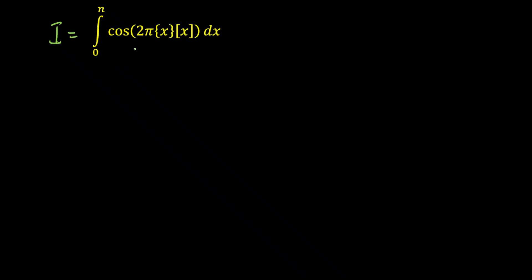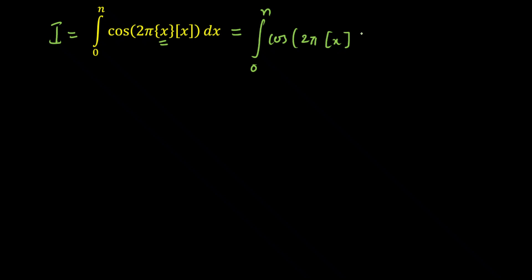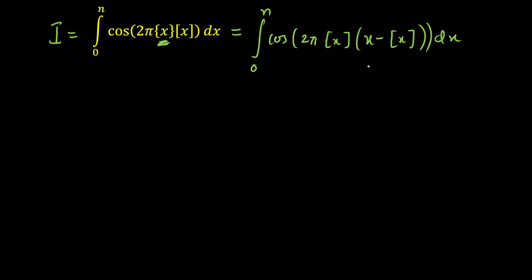Now I know that I cannot integrate this function unless I know the function is continuous from 0 to n. Fractional part of x and gif of x (greatest integer function) are not continuous at integer values of x. So we have to break the limit so that the function is continuous, and only then can we integrate. We rewrite fractional part of x as x minus gif(x), which makes it easier to break since we have gif(x) appearing in both places inside the integral.